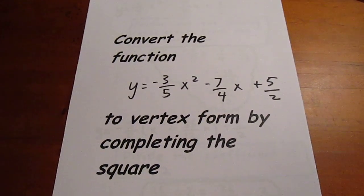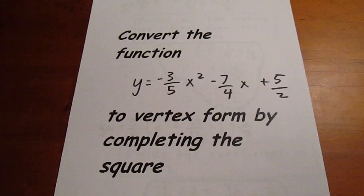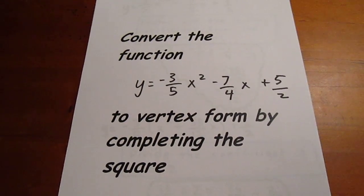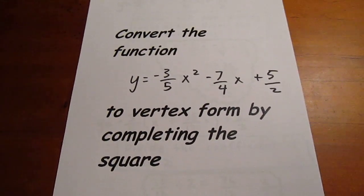What we'd like to do is convert the function y equals negative 3 over 5 times x squared minus 7 over 4 times x plus 5 halves to vertex form by completing the square.